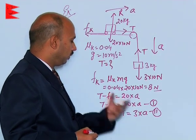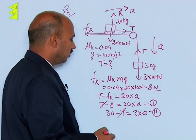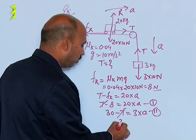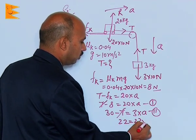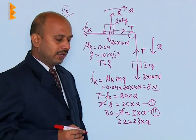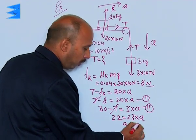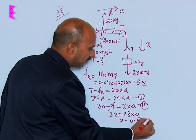If you solve these two equations, add these two, this and this will get cancelled and here 30 minus 8 is here, that is 22, and is equal to 23 into a. So in this case, a is equal to you are getting 0.96 meter per second square.